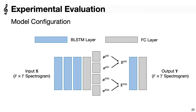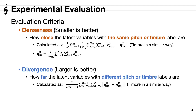This is the model configuration we used. We utilized the bidirectional long short-term memory architecture for its encoder and decoder to capture temporal characteristics of sounds. We originally developed two evaluation criteria: the denseness and the divergence. The denseness shows how close the latent variables with the same pitch or timbre labels are, and the divergence shows how far the latent variables with different pitch or timbre labels are. The value of the denseness should be small, while the divergence should be large.